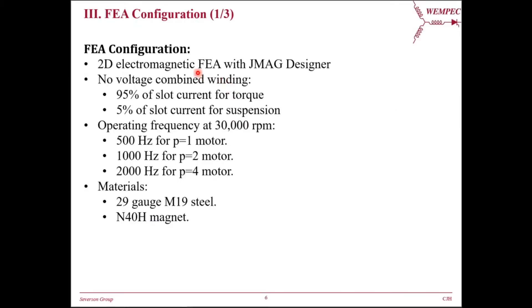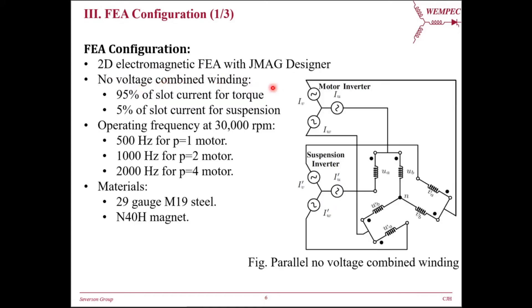With the state winding design available, we are now ready to configure the FEA. The FEA will be called during optimization. The FEA tool we use is the 2D electromagnetic FEA in JMAG designer. The FEA will take state excitation from a no-voltage combined winding as input, where 95% of slot current is used for torque, while the left 5% is for suspension. The operating frequency depends on the motor's pole-pair number, and the 29-gauge M19 steel and M40H magnets are assumed.